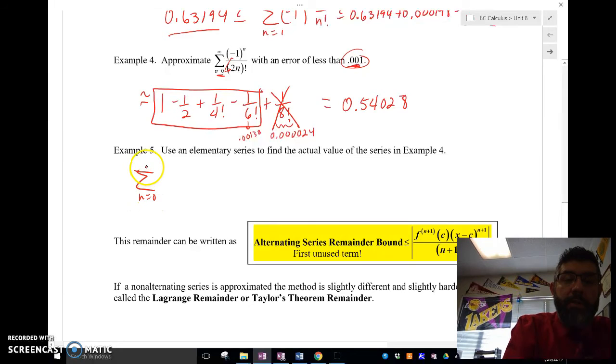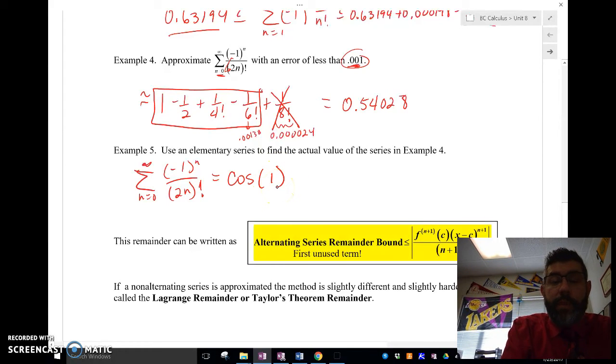This is the sigma notation for, we've covered this in the last unit. This is an elementary series. This is sigma notation for cosine of 1 because there's no,